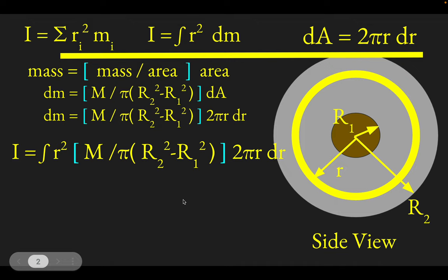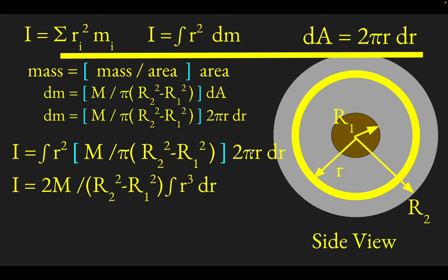What I would do next is pull all constants outside the integral. So first of all, these pi's are just going to cancel. We have a 2M that can pull out, and then this difference of squared radii that are here. And then we're just left with an integral over R cubed DR. Now, why is it R cubed? You had an R squared over here, and an R right there that conspired to make an R cubed.